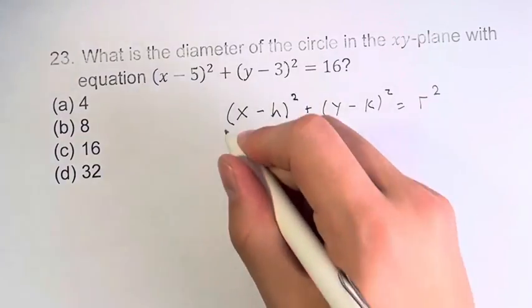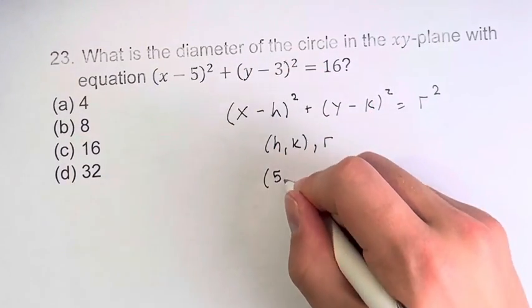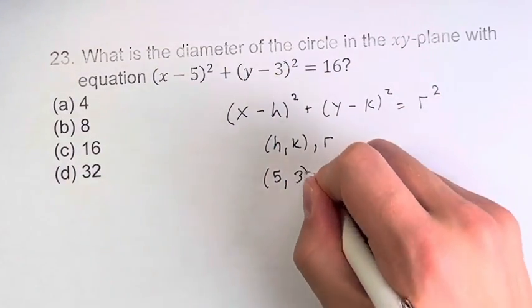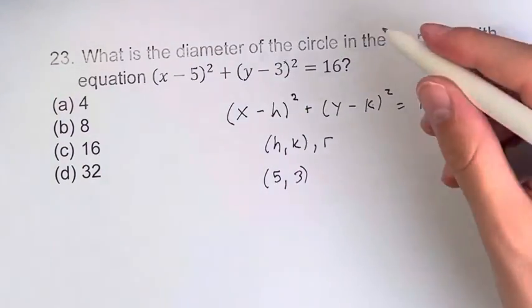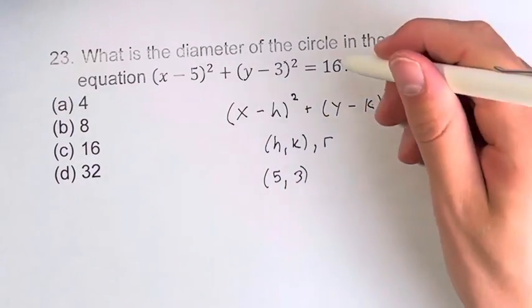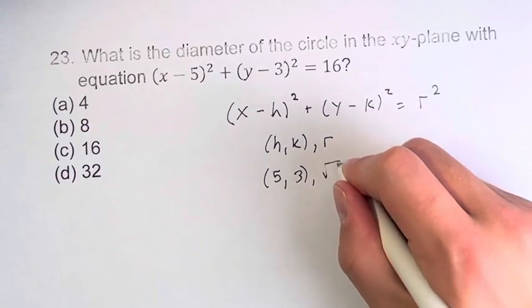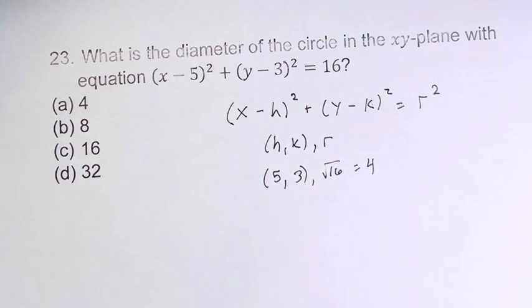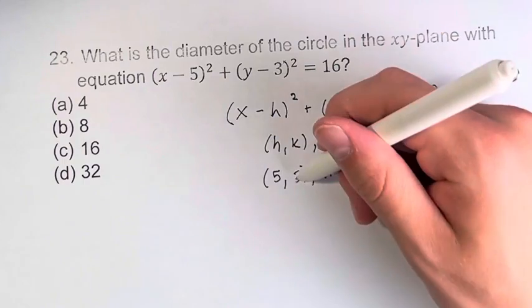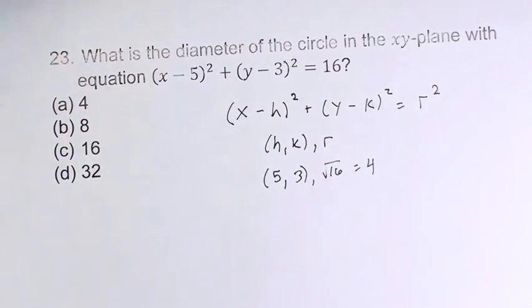So in this case the center of the circle is 5 comma 3 and the radius is the square root of this r squared value. It's the square root of 16 which we know is 4. So now we know that the center of the circle is 5, 3 and the radius is 4.